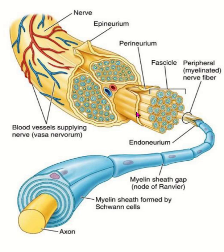called perineurium. Each nerve bundle is formed by several nerve fibers. A nerve fiber is formed by the axon, and myelination is formed by the Schwann cell which surrounds the axon.